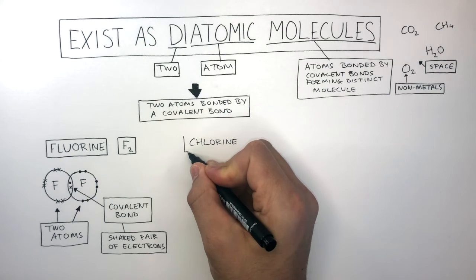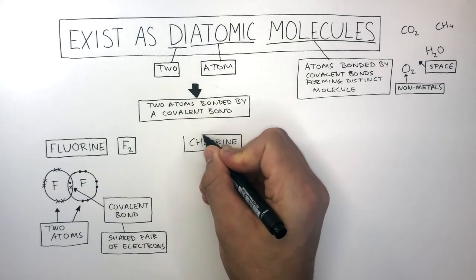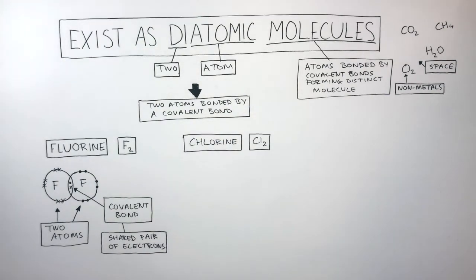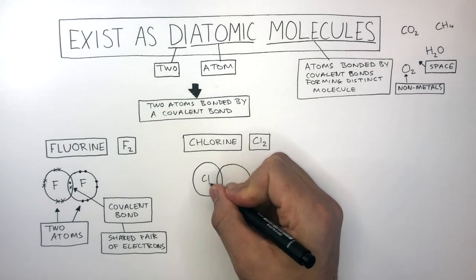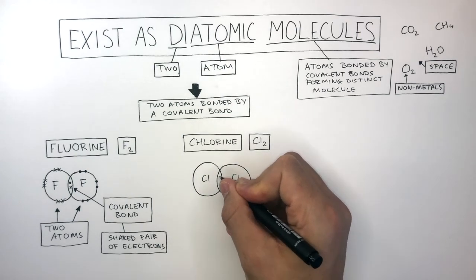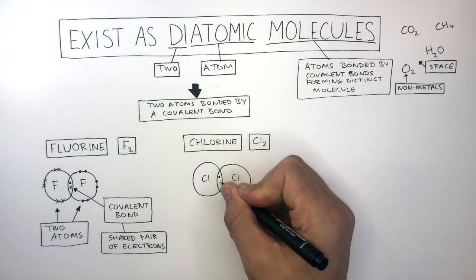Chlorine is a diatomic molecule which has the molecular formula Cl2. When drawing a dot and cross diagram of a diatomic molecule, you draw two circles overlapping. You draw the symbols in the middle and then you draw the covalent bond where the two circles overlap. If it is a single covalent bond, it is just a dot and a cross.